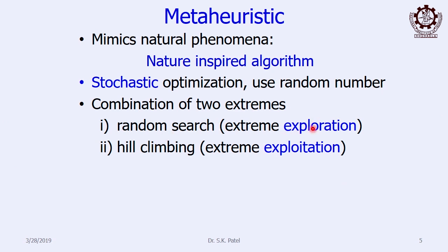When in the exploration stage, it randomly searches the entire search space. Once it gets a hint that the optimal point is located at some particular region, it exploits that region. This is also called hill climbing for maximization problems, and hill descending for minimization problems. The combination — how much percentage is random search and how much is hill climbing — decides the characteristics of a particular meta-heuristic. It varies from one meta-heuristic to another.